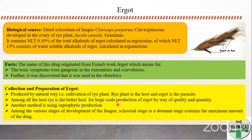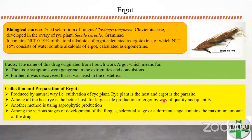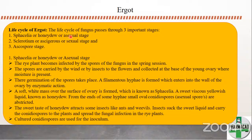Ergot is collected by natural cultivation of the rye plant where the rye plant is the host and ergot is the parasite. Rye is chosen because it is a better host for large production of ergot by quality and quantity. Another method is saprophytic production. Among the various stages of development of the fungus, the sclerotial or dormant stage contains the maximum amount of the drug.